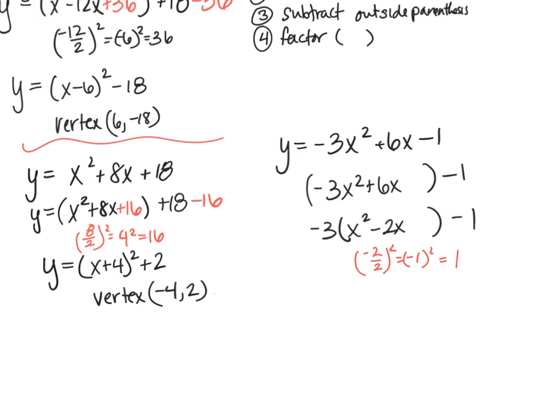So I'm going to add 1, and this 1 gets multiplied by a negative 3. So then I'm going to subtract 1 times the coefficient, negative 3. We have to multiply by the coefficient.